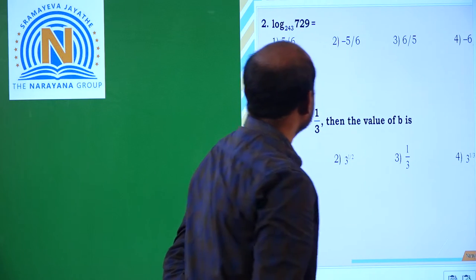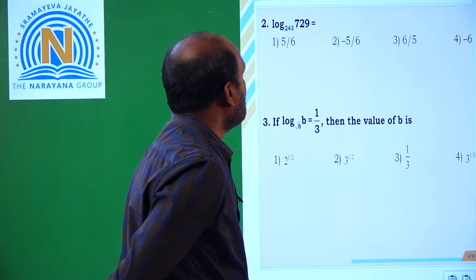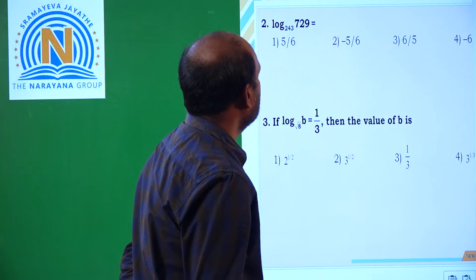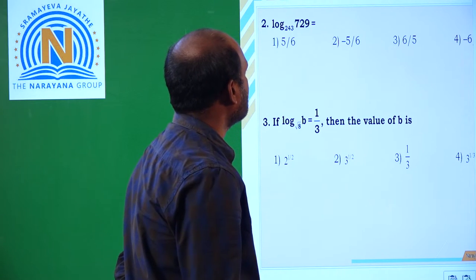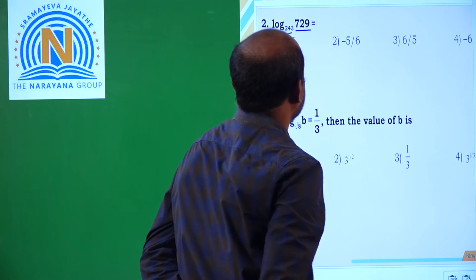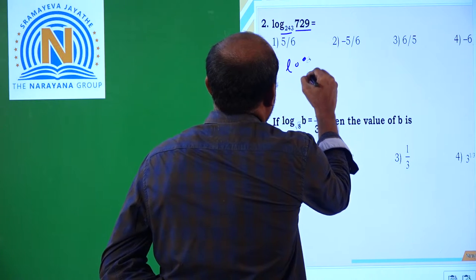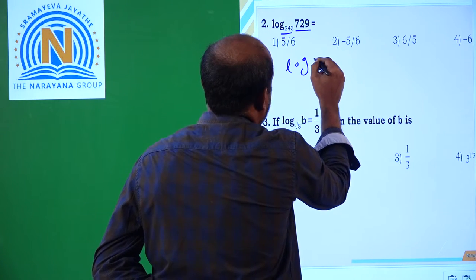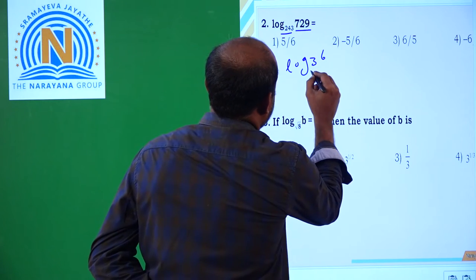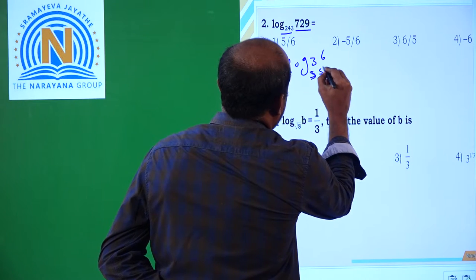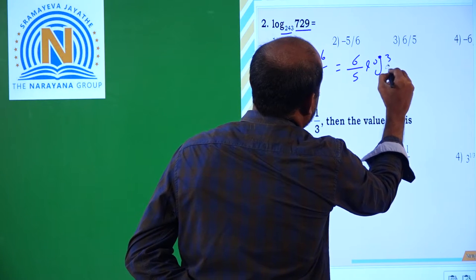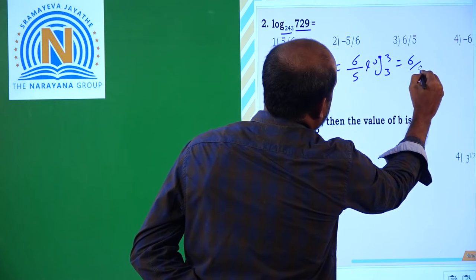Coming to the next one: log 729 base 243 is equal to? Log 729 base 243 — 729 can be written as 3 power 6, and 243 can be written as 3 power 5. That is equal to 6 by 5, and log 3 base 3 is equal to 1, so the result is 6 by 5.